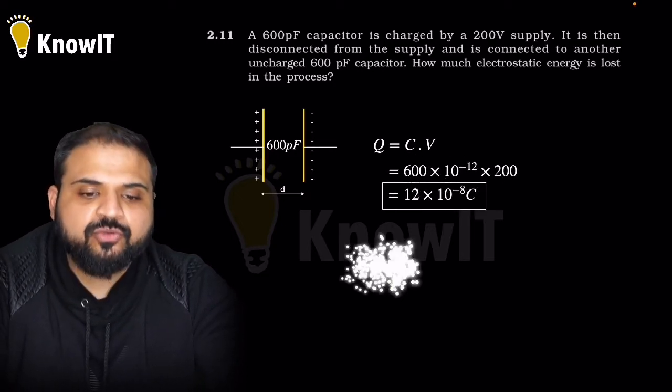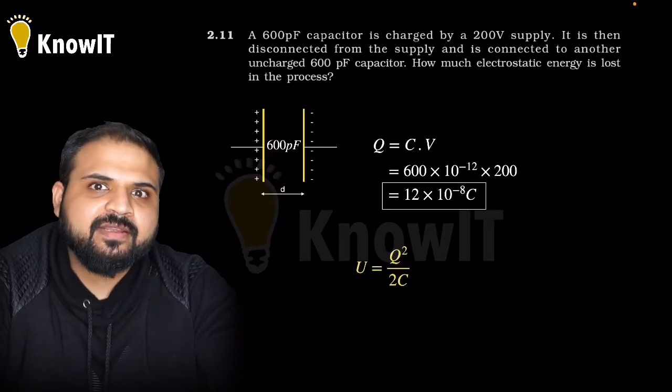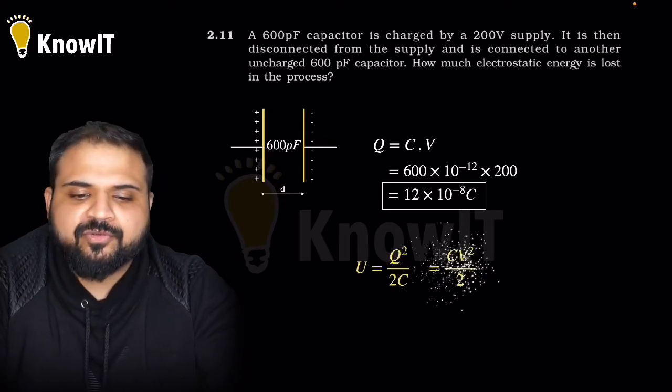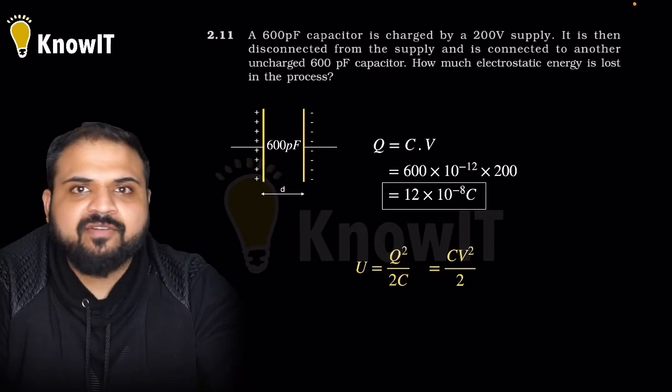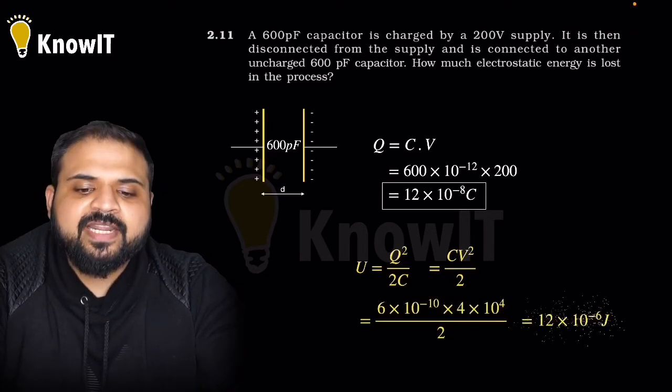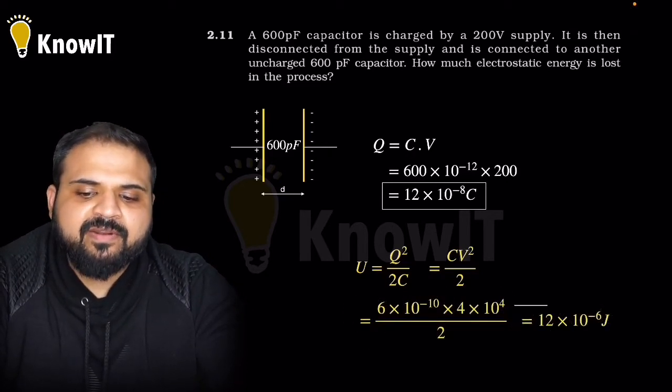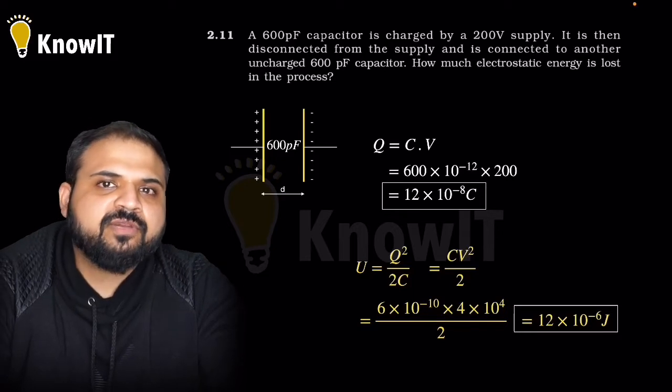Let us find out energy also. Energy can be found using four formulas but we'll be using half CV square or half Q square by 2C. We'll be getting energy as 12 into 10 power minus 6 joules. So the first half of the question is quite easy.